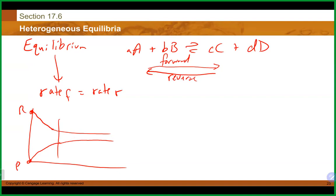On a graph, starting with reactants, the forward reaction occurs first making products. Eventually both level out and maintain their concentrations — that's where chemical equilibrium is reached, when there's really no change.